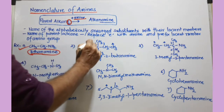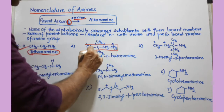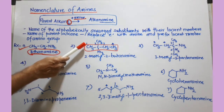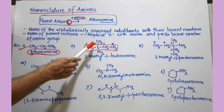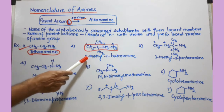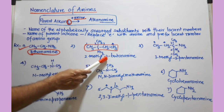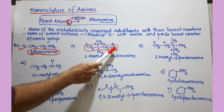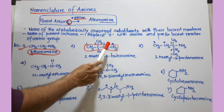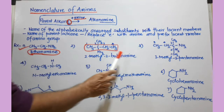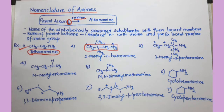In this compound, we select the longest chain of carbon and provide numbers such that the carbon bearing the amino group gets the least possible number. Numbering from one end gives 1, 2, 3, 4. At the second carbon there is a methyl substituent — so that is 2-methyl. The amino group is present at carbon number 2, so the prefix is 2. The longest chain has 4 carbons, so it is butane. Replacing the 'e' of butane and adding 'amine' gives butanamine. So the name is 2-methyl-2-butanamine.